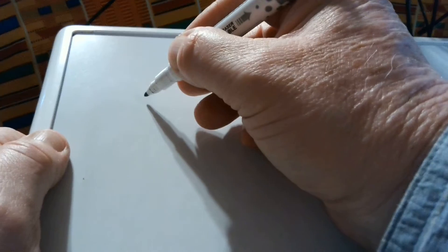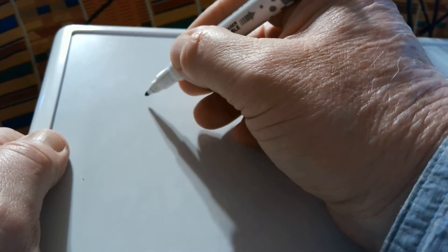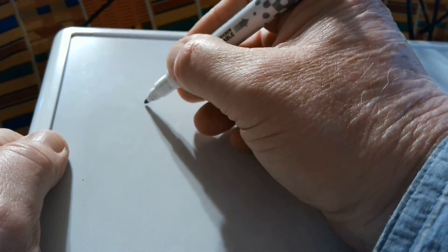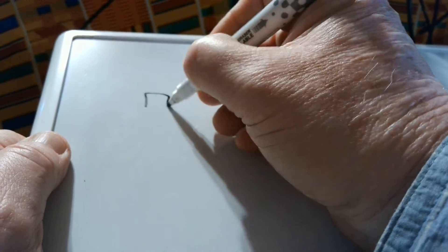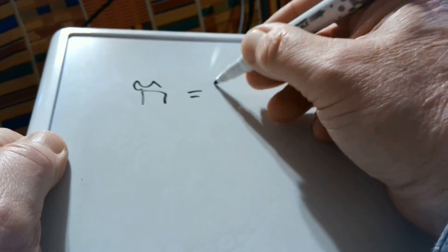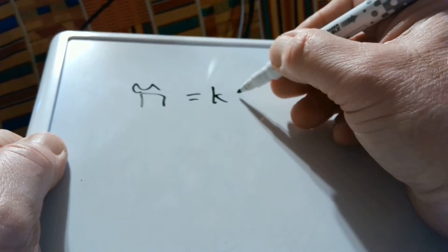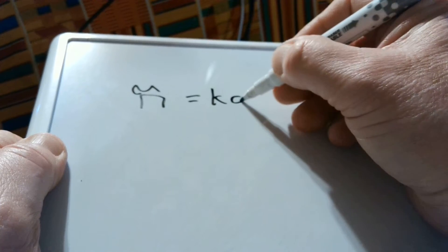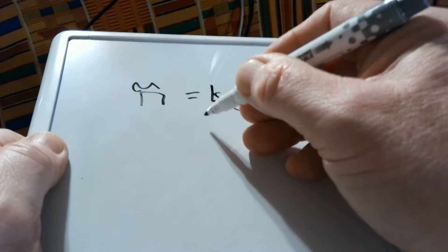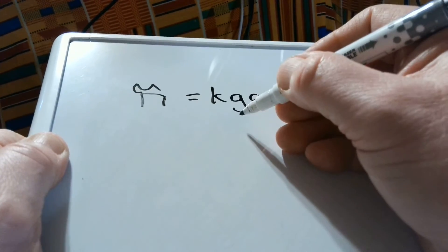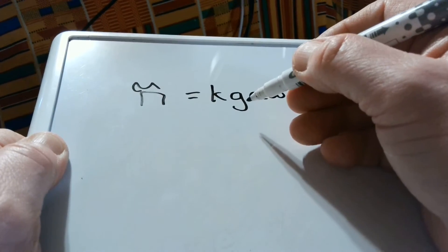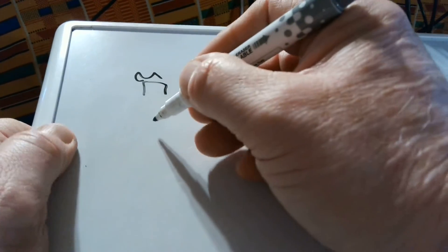So the first consonant in the Khmer alphabet is KAH. It's a sound that's kind of between a K and a G. It's not KAH, it's not GAH, it's KAH. That's the first consonant.